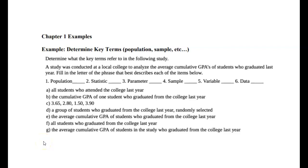Hello everyone. Let's look at an example from chapter one where we're asked to determine key terms for a scenario — terms like calculation, sample, etc. A study was conducted at a local college to analyze the average cumulative GPAs of students who graduated last year. We're going to fill in the letter of the phrase that best describes each item: population, statistic, parameter, sample, variable, and data. Those are important things to identify when reading about a statistical study.